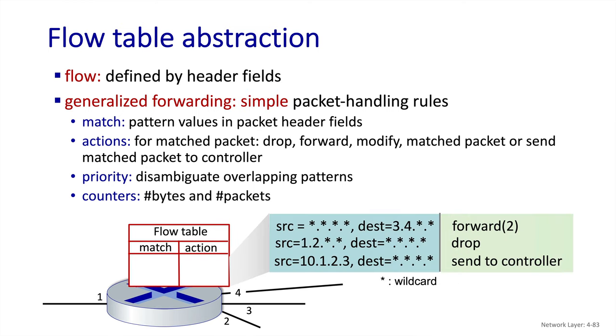Here's some example rules. The first one says for any packet with any source address and a destination address starting with 3.4, forward it out link 2. The next one says if the packet has a source starting with 1.2, no matter what its destination is, it should be dropped. And the last one says for any packet coming from 10.1.2.3, send it to the controller for handling.